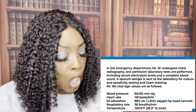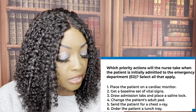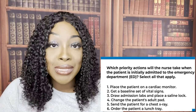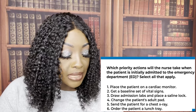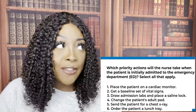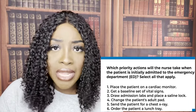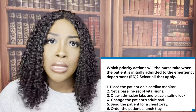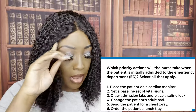First question: Which priority actions will the nurse take when the patient is initially admitted to the emergency department? Select all that apply. We treat select-all-that-apply as true or false. Number one: place the patient on a cardiac monitor — True. If you go back to this patient's vital signs, that heart rate is 118. Normal heart rate is supposed to be 60 to 100, so we're concerned about dysrhythmias. Absolutely, we're going to have them on a heart monitor.